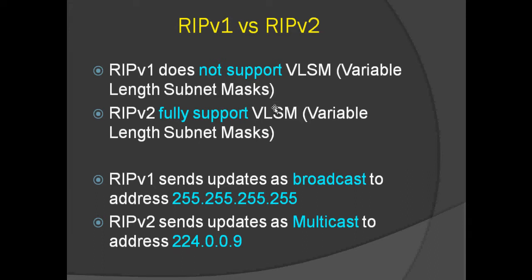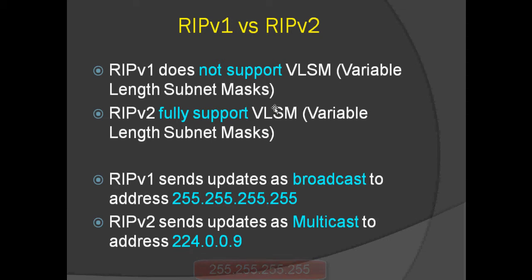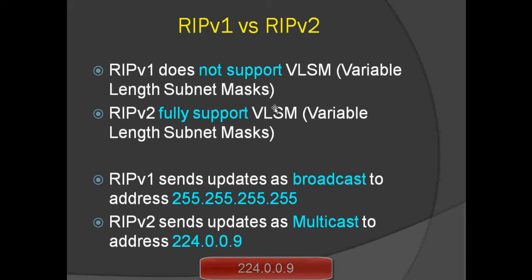RIP version 1 is classful and RIP version 2 is classless. RIP version 1 does not support VLSM, while RIP version 2 fully supports VLSM. RIP version 1 sends updates as a broadcast to address 255.255.255.255, and RIP version 2 sends updates as a multicast to 224.0.0.9.